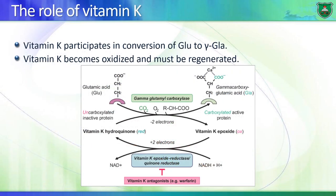The carboxylation reaction requires vitamin K as a source of electrons - vitamin K is oxidized into vitamin K epoxide. It is very important for vitamin K epoxide to be reduced to regenerate the active form of vitamin K, and this happens enzymatically with an enzyme known as vitamin K epoxide reductase, which requires NADH as a source of electrons. This enzyme is the target of the famous antagonist warfarin.